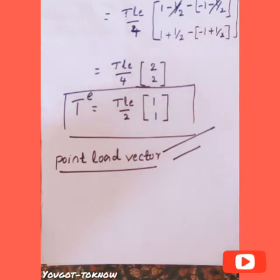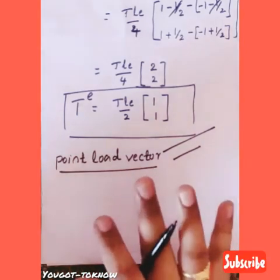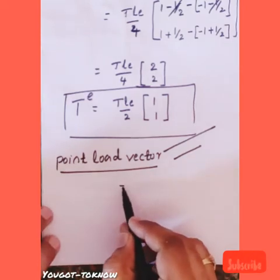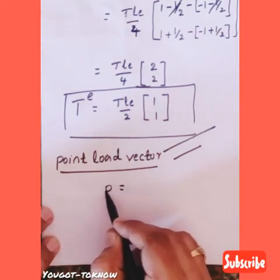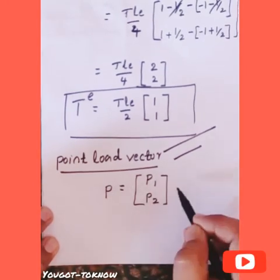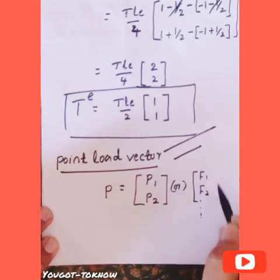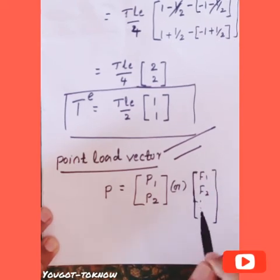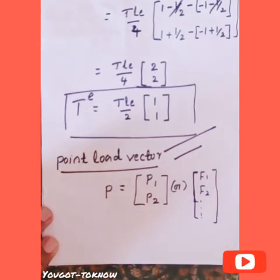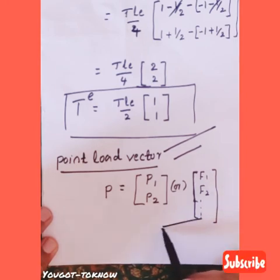When you take the point load vector, point load means a force acting at a particular point. For this, we don't have a derivation; we can directly express it. For a simple one-element system, P equals [P1, P2] or [F1, F2], depending on the number of nodes. For two nodes, P1 is the point load at node 1 and P2 is the point load at node 2.